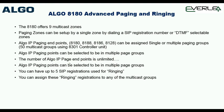Just touching on the advanced paging and ringing — from a sales perspective, the 8180 has nine multicast zones (page groups), of which you can use six or seven, plus things like all-page and music on hold, which are counted as part of those channels. Have a talk to us if you particularly want to set up multiple zones.